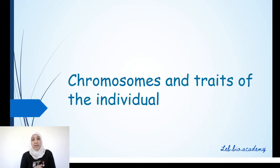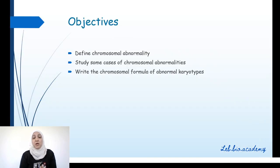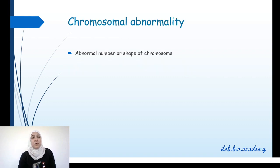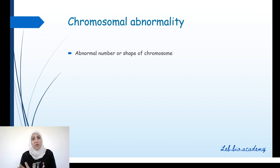Chromosomes and traits of the individual. In this lesson we will define what is the meaning of chromosomal abnormality, study some cases of chromosomal abnormality, and learn how to write the chromosomal formula of abnormal karyotypes. A chromosomal abnormality is simply an abnormal number or shape of chromosome.